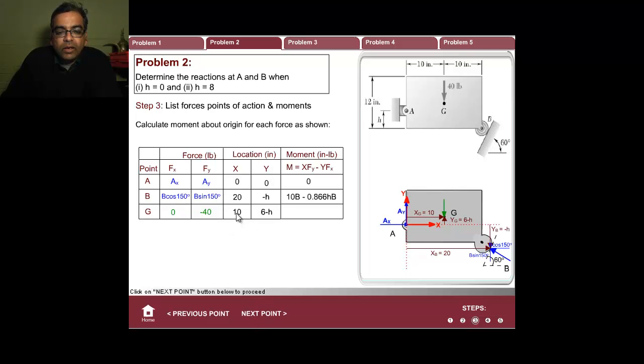That one is 20 times B sin 150, which is 10B, and minus h times B cos 150, which is minus 0.866hB. This one is 10 times minus 40 minus 6 times 0, so that's minus 400. We've written all the forces and the corresponding moments.